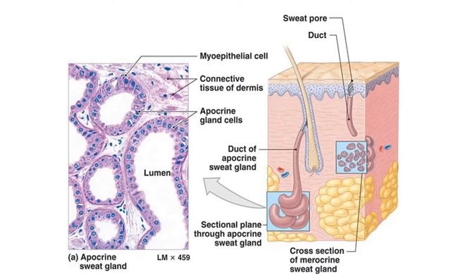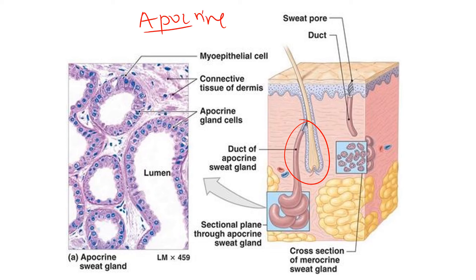One type of sweat gland is the apocrine sweat gland, which is anchored to a hair. These are found in your armpit, groin, and head. An easy way to remember: 'apocrine' has the word 'ape' hidden in it — apes are hairy, and these sweat glands are always associated with a hair. There are two types of sweat glands: apocrine and eccrine.